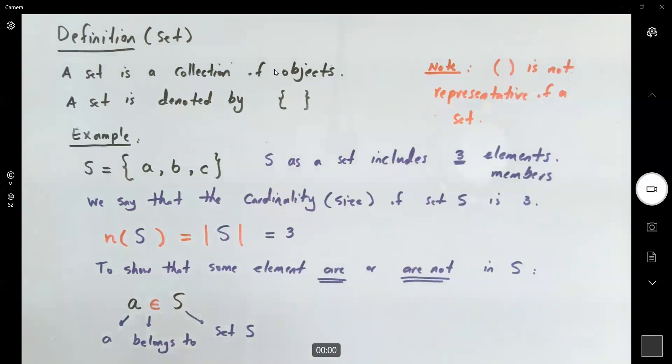What other members are here? B is also a member. You're going to write B belongs to, is a member of set S. Again, it's important to read these properly. B belongs to set S.